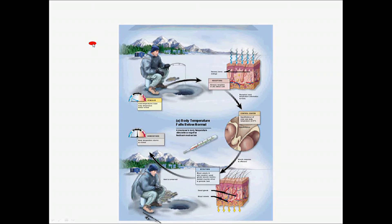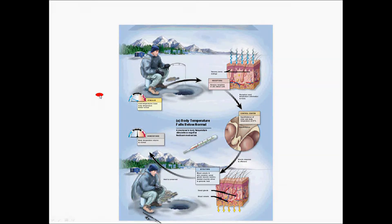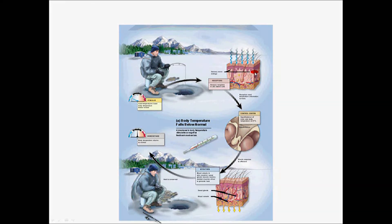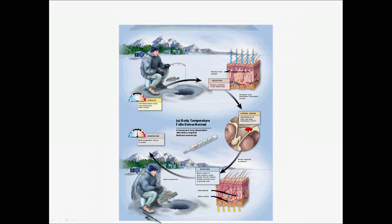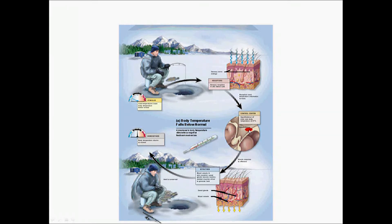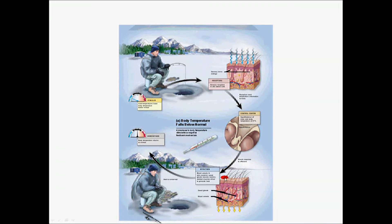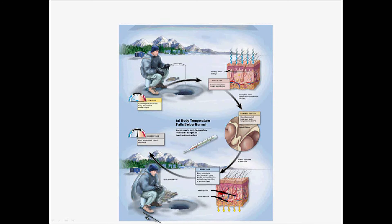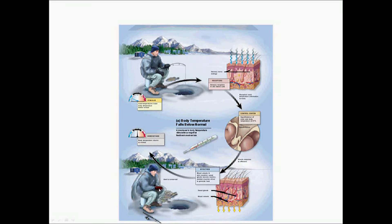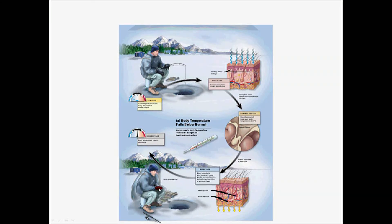Here is a figure showing the example just given. The stimulus is the decrease in temperature, detected by sensory receptors in the skin. The hypothalamus receives the signal from the receptors — that is the control center. It sends its own signal to the effectors: the blood vessels, the hair follicles, and the muscles. Heat is then conserved, and you get a return back to homeostasis.